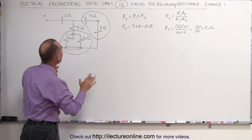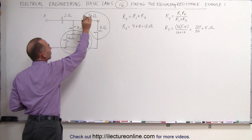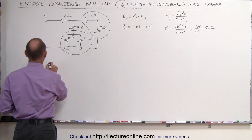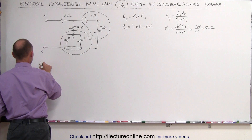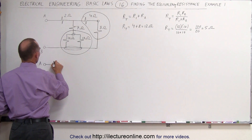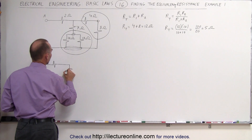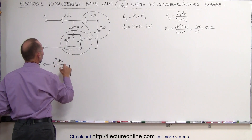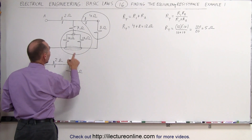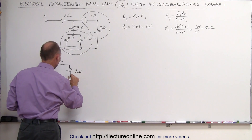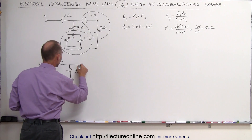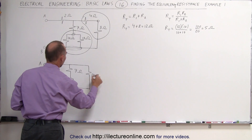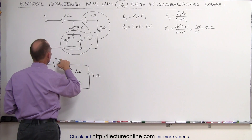We now redraw the circuit and replace each pair of resistors with a single equivalent resistor. We still have connections A and B, still have the two ohm resistor, and the seven ohm resistor is unchanged. The two ten ohm resistors become a single five ohm resistor, and the four and eight ohm resistors together become a twelve ohm resistor. So now we have twelve ohms, five ohms, seven ohms, and two ohms.